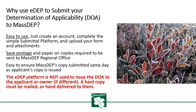First, it's easy to use. Just create an account, complete the simple submittal platform, and upload your completed form and attachments. You also save postage and paper on copies otherwise required to be mailed to MassDEP's Regional Office. It's easy to ensure that MassDEP's copy is submitted the same day as the applicant's copy is issued.